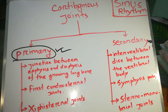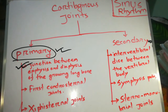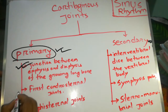Primary cartilage and joint — for example, the junction between epiphyses and diaphyses of the growing long bone. We are going to discuss the primary cartilage joint. First, the chondro-sternal joint.